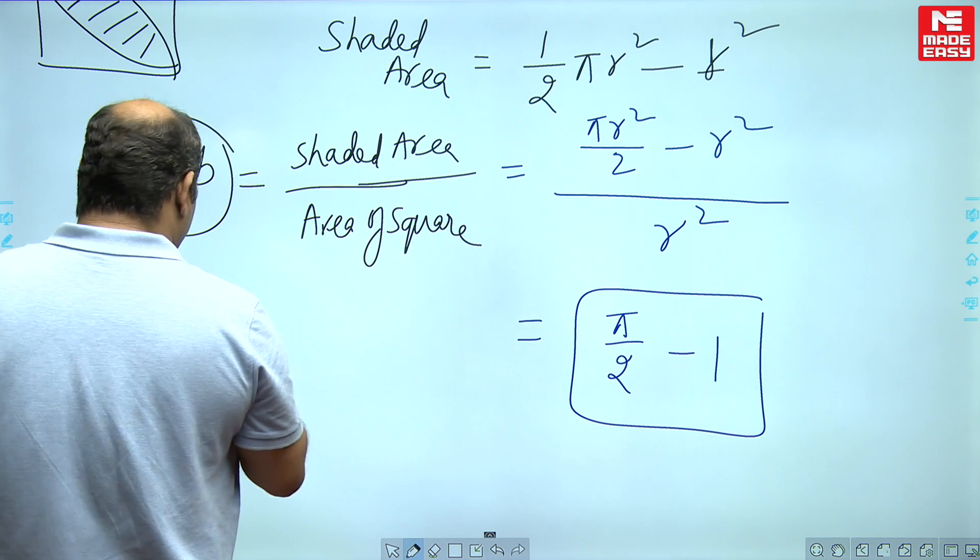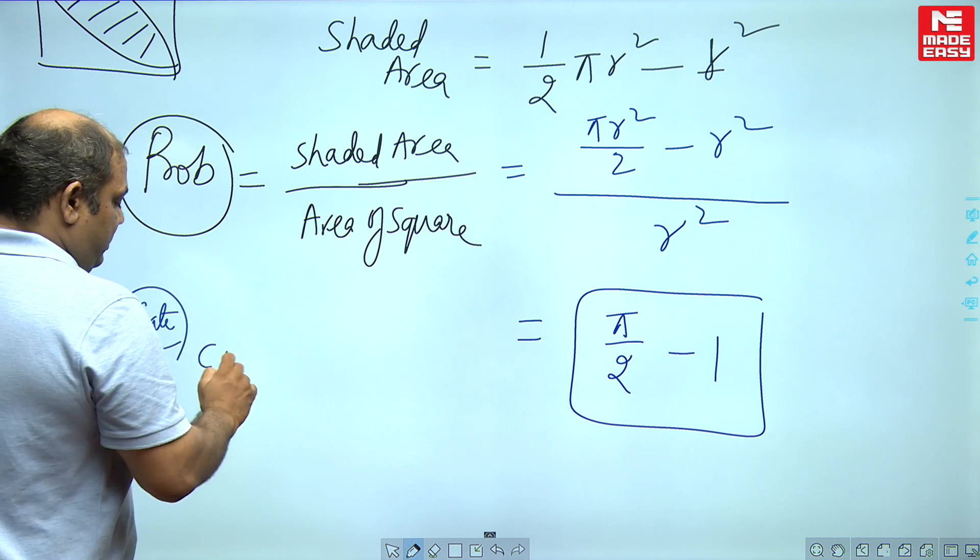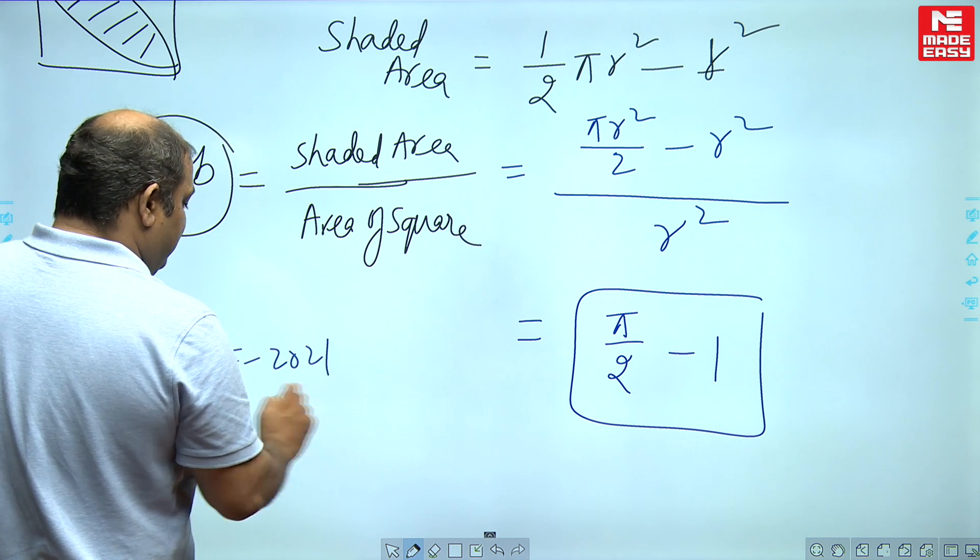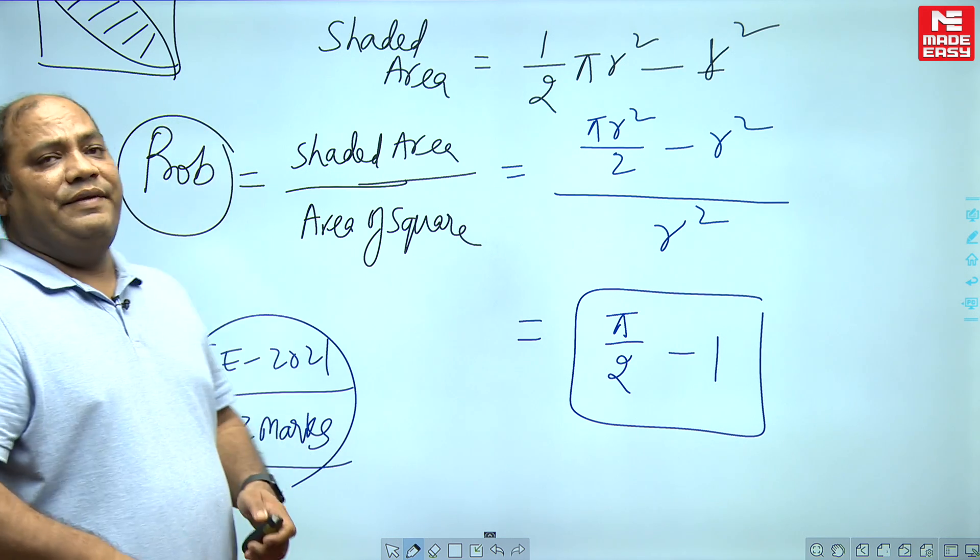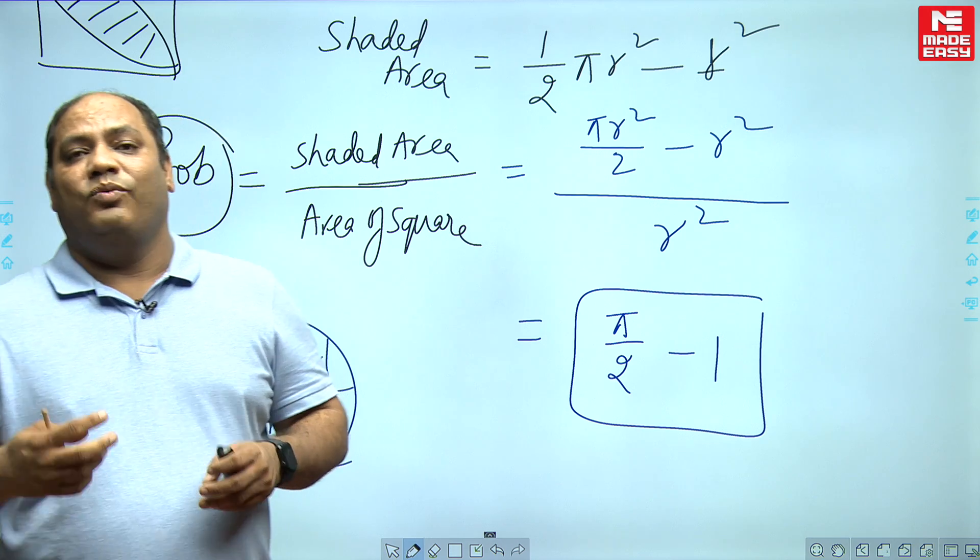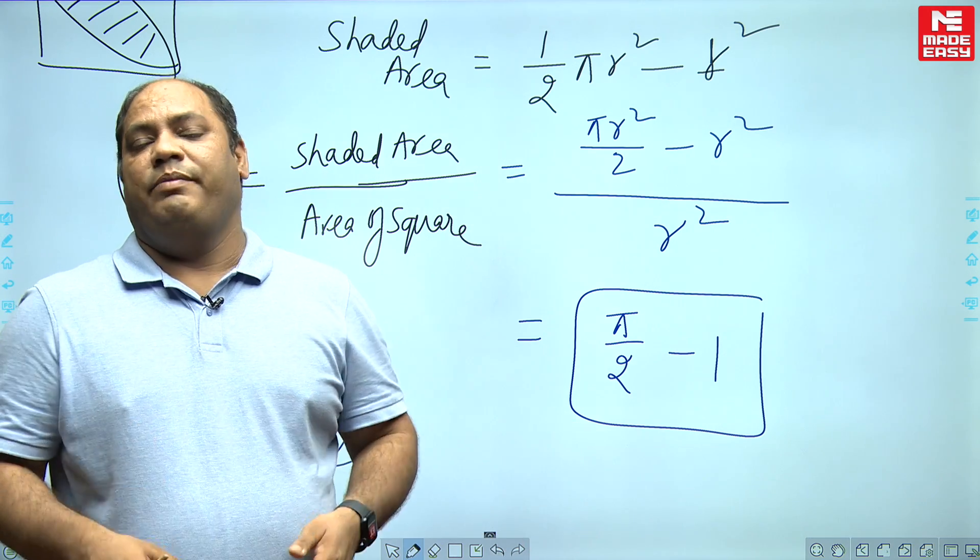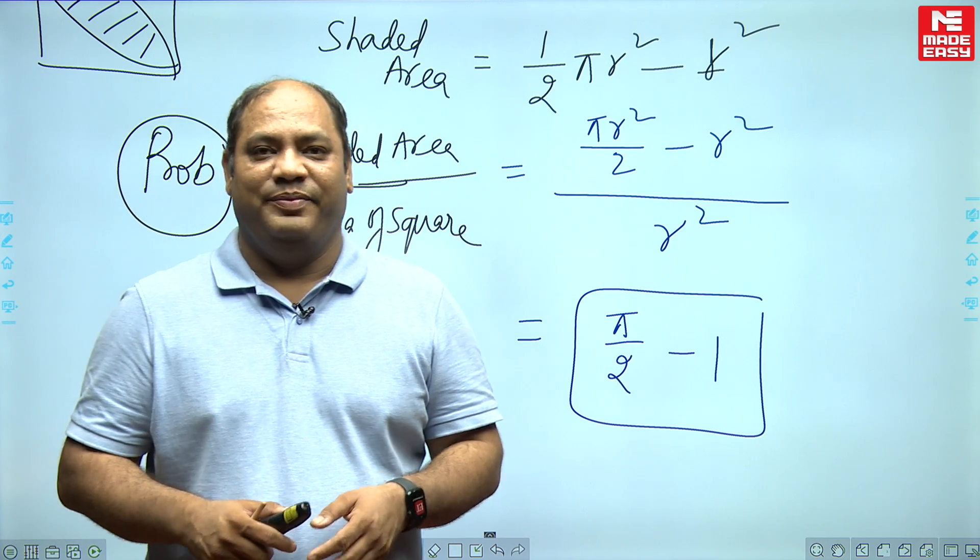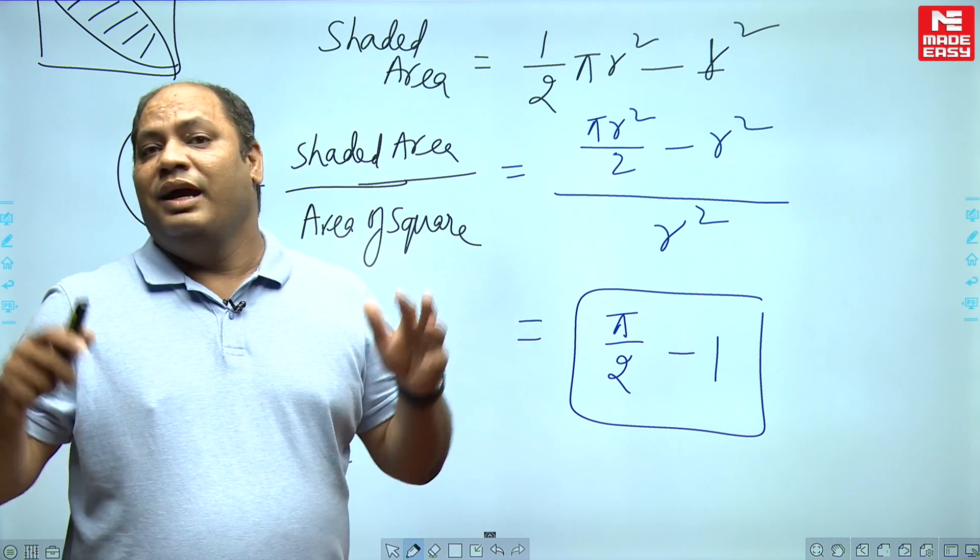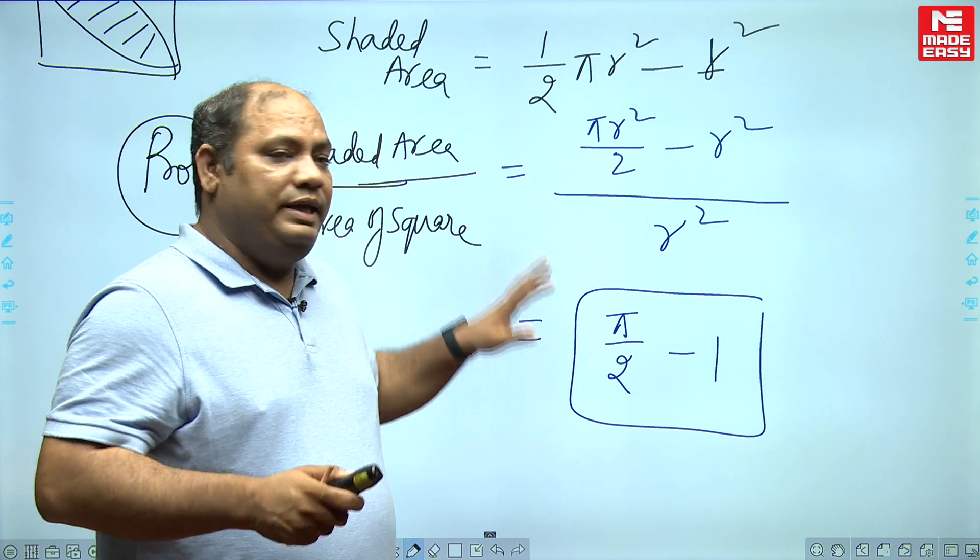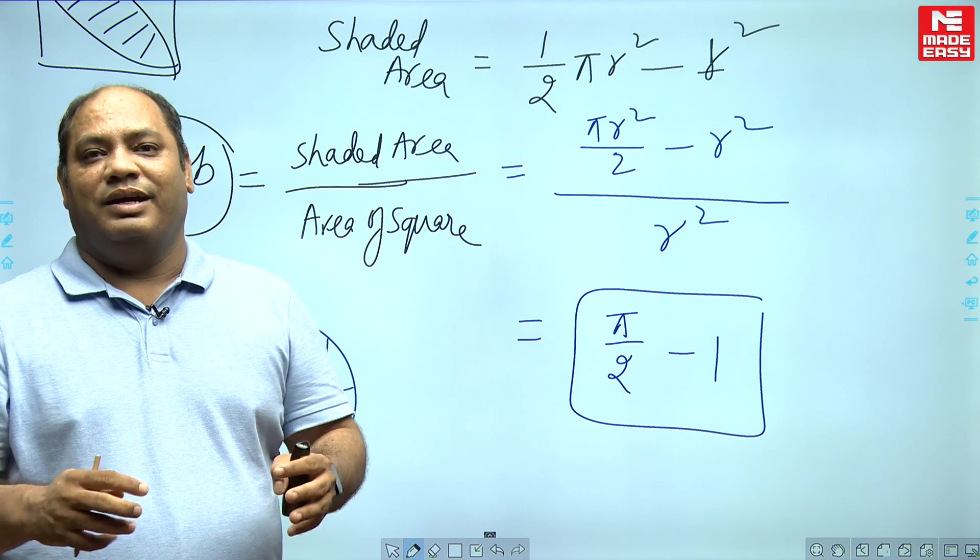This question came in GATE CE 2021, 2 marks. Imagine if I spend around one to one and a half minutes and get 2 marks, I will be in an advantageous position. In reasoning and aptitude you can get around 8 to 10 marks easily. You can solve those questions in 7 to 8 minutes and extract those 10 marks.